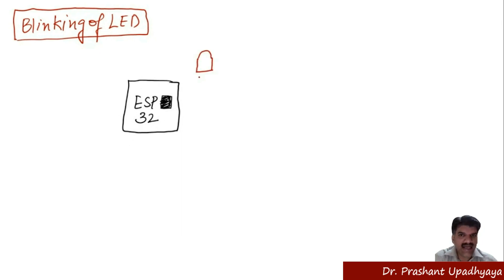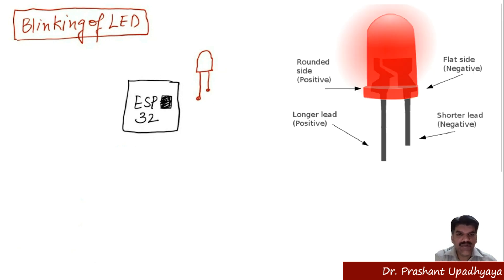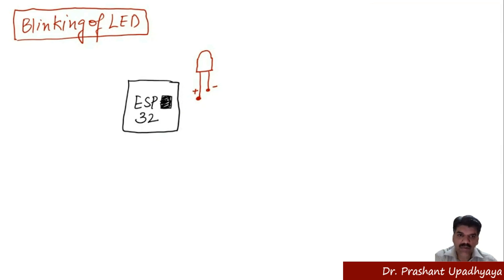We will use an LED, which has an anode and a cathode. If you are new to LEDs and don't know which is the positive or negative part, there is a long tail and a short tail. The long tail represents the positive terminal and the short tail represents the negative terminal. We connect the positive terminal to pin D2 on the ESP32 and the negative terminal to ground.